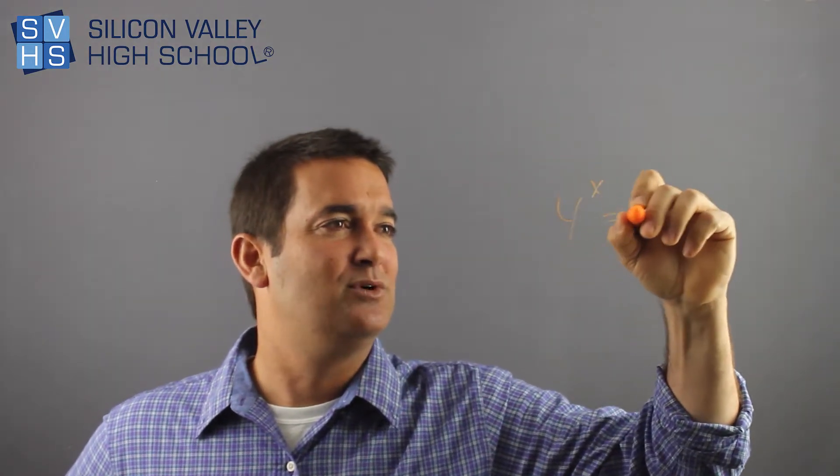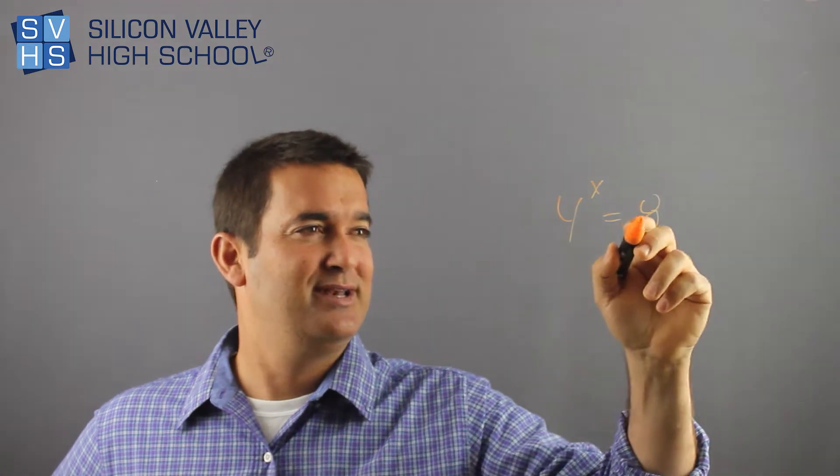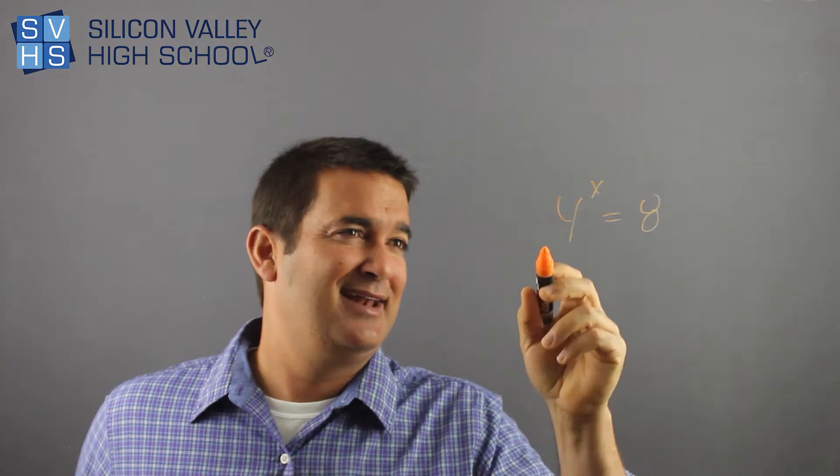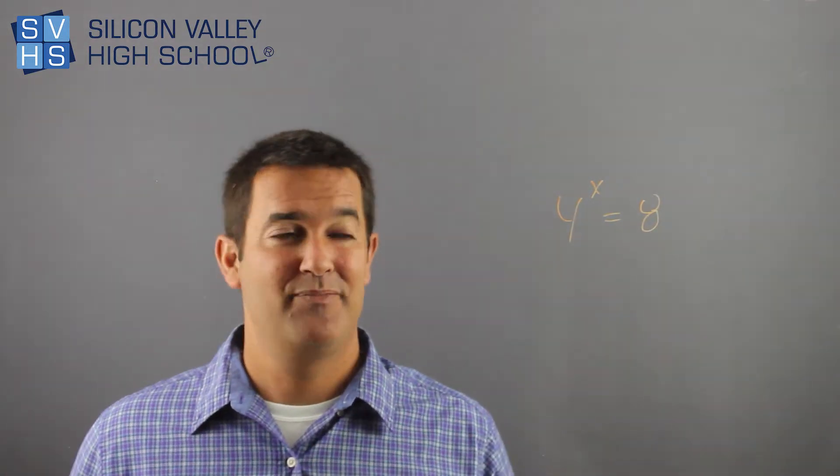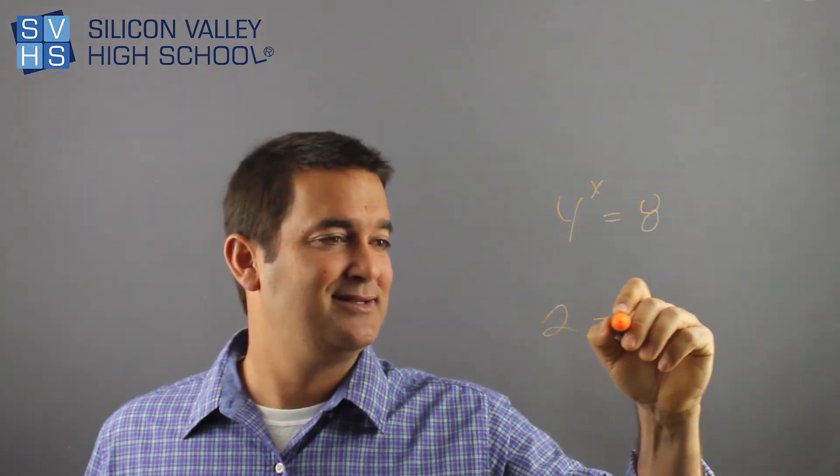What if you have 4^x = 8? Both of these need to change. 8 is not 4 to the something. There is no 4 to the something that equals 8. So you're out of luck. You're like, they must have made an error when they made this problem. What if you change both bases to 2? 2 to the something.